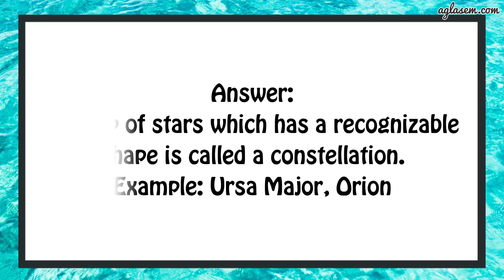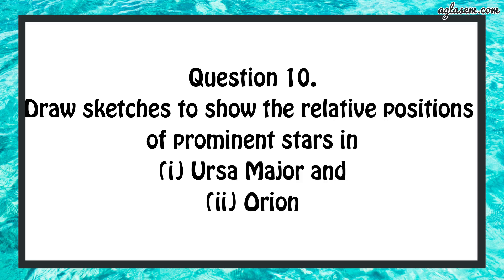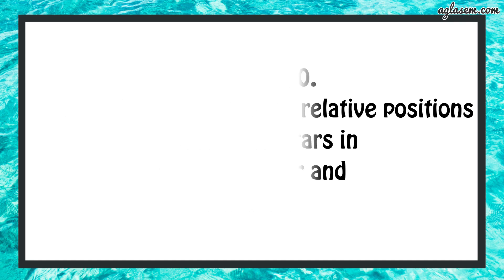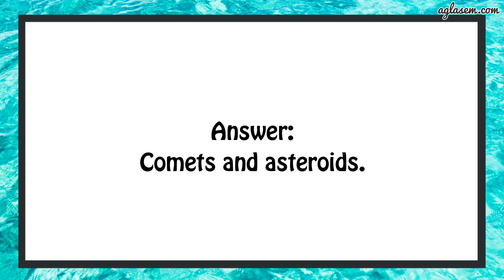Question number 10: draw sketches to show the relative positions of prominent stars in Ursa Major and Orion. You can do it yourself. Question number 11: name two objects other than planets which are members of the solar system. Answer: comets and asteroids.